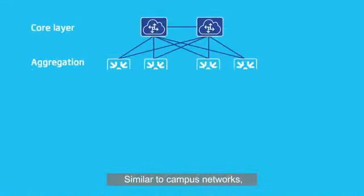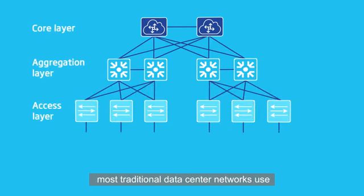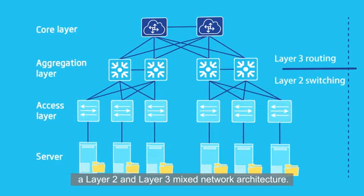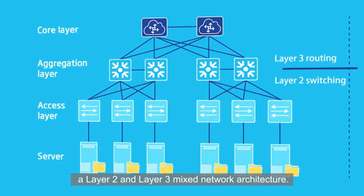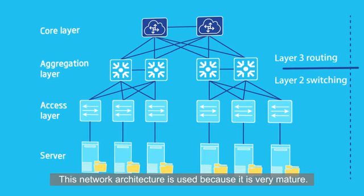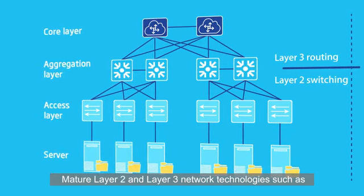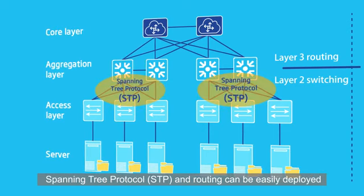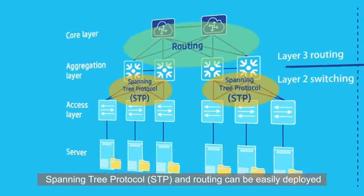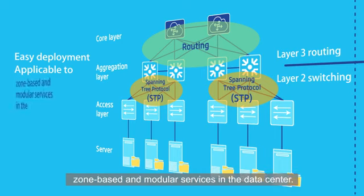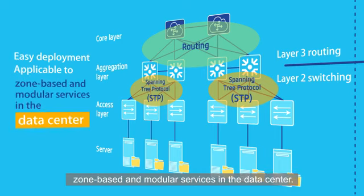Similar to campus networks, most traditional data centre networks use a layer 2 and layer 3 mixed network architecture. This network architecture is used because it is very mature. Mature layer 2 and layer 3 network technologies such as spanning tree protocol and routing can be easily deployed on the network and are applicable to zone-based and modular services in the data centre.